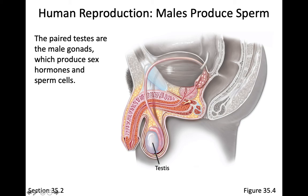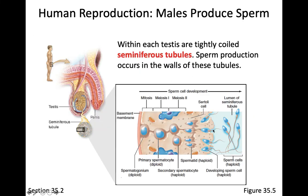Down in the testes — the gonads — hormones like testosterone are produced, and sperm cells are produced as well. You have a diploid cell, and you take it from diploid to haploid through meiosis to form sperm cells. This is the generation of germ cells. That germ cell, which is diploid, will form a primary spermatocyte — also diploid. Inside the testicles, there are tons of coiled up little tubes with a hollow center, and on the edges of those tubes is where sperm production occurs.